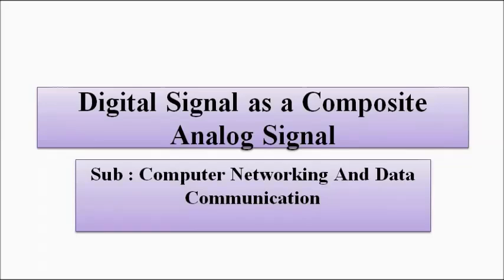Hello friends, welcome to Engineering Tutorial. We will continue our discussion with the basic concepts related to the physical layer of the network model. So far we have discussed various basic concepts related to signals, signal characteristics, analog and digital signals, and composite signals. In this video we are going to combine two of these concepts and try to explain one in terms of the other. This video is about the visualization of a digital signal, or the representation of a digital signal as a composite analog signal.